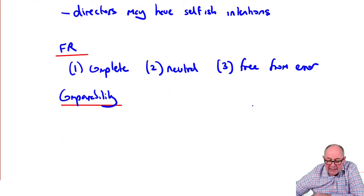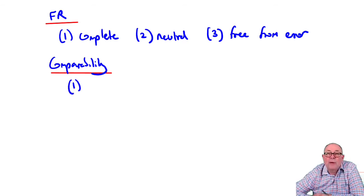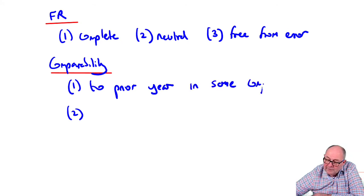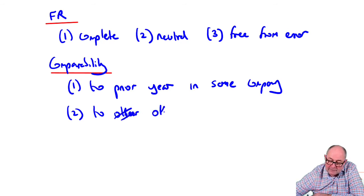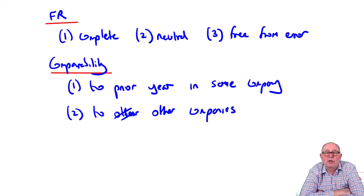In trying to discuss comparability, comparability is achieved in two ways. You have to think about comparability to the prior year in the same company. If they change policy, you will get comparability because they'll do a prior period adjustment. And secondly, comparability to other companies. If two retailers of clothing have similar business models, but one thinks FIFO is right and one thinks average cost is right, then you won't get comparability. That's just the way it is.